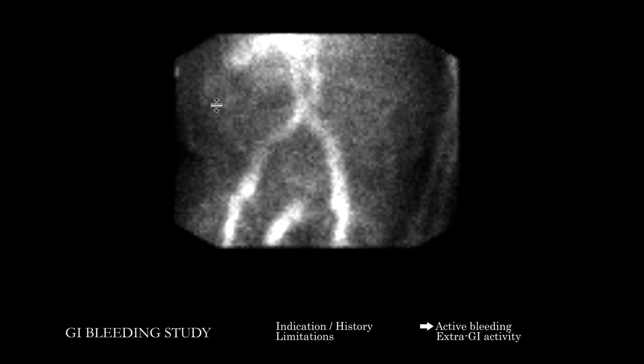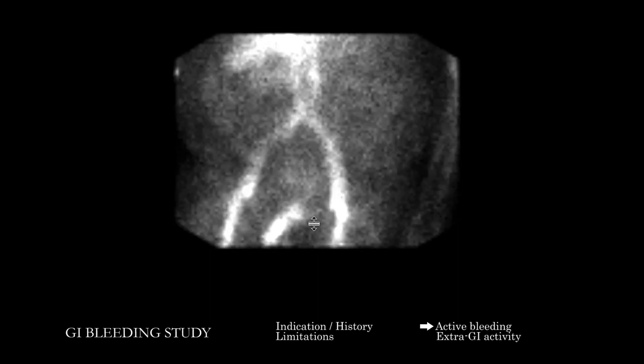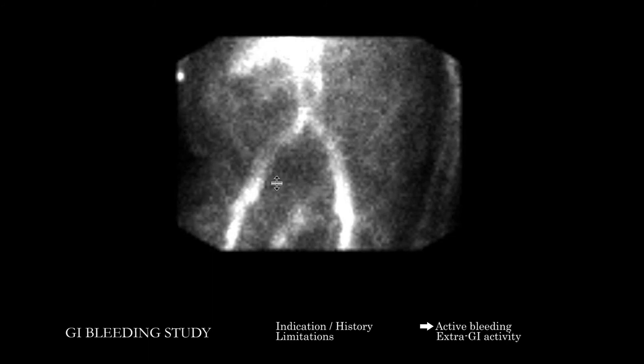When looking for slow gastrointestinal hemorrhage, there are three key features we're really looking for. First, activity that conforms to bowel — it appears in and conforms to the expected distribution of bowel in this particular patient. Prior imaging is important to understand that expected distribution. Second, the activity should increase over time over the course of the study. Third, it should move anterograde and retrograde through the bowel anatomy. The normal penile blush, for example, is pretty stable and does not move back and forth along bowel.